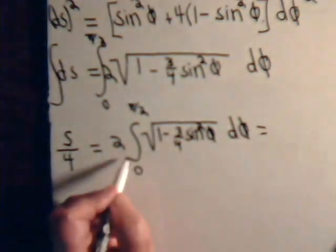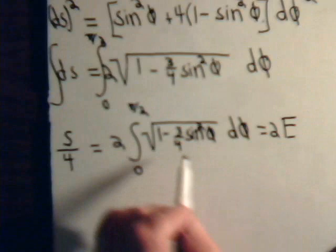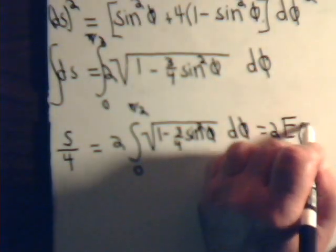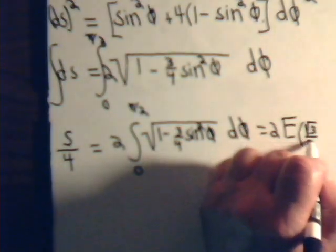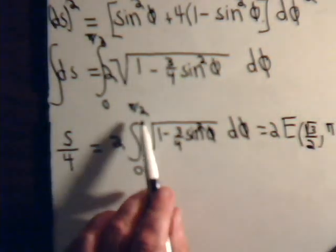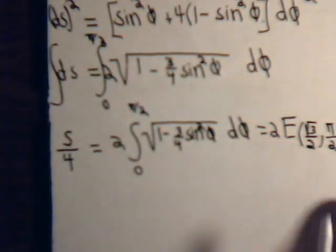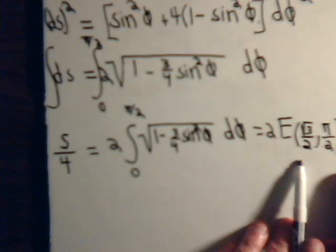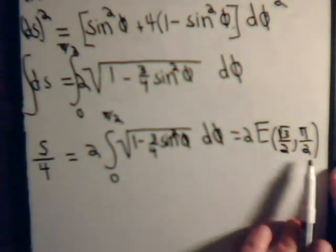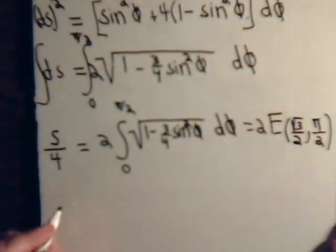So this equals 2, and it's going to be the elliptical function E of k, which is the square root of 3 over 2, comma phi the upper limit is pi over 2. And we can look this up in a table to get a numerical value for this. That's one fourth the arc length.